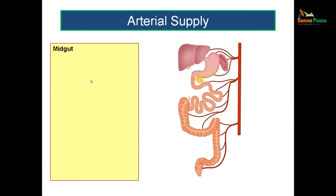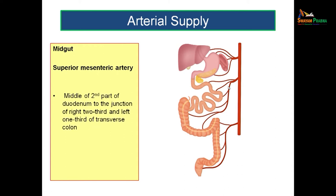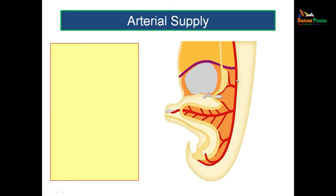The blood supply to the midgut comes from the superior mesenteric artery. You can see the three main branches arising from the abdominal aorta: the first is the celiac artery, the second is the superior mesenteric artery, and the third is the inferior mesenteric artery. The midgut gets blood supply from the superior mesenteric artery. The region supplied starts from the second part of the duodenum — almost the middle — to the junction of right two-thirds and left one-third of the transverse colon. So the artery of the midgut is the superior mesenteric artery.